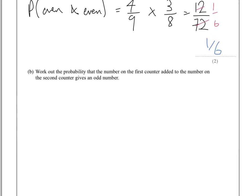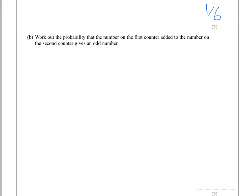The next part, part B, tells us to work out the probability that the number on the first counter added to the number on the second counter gives an odd number.